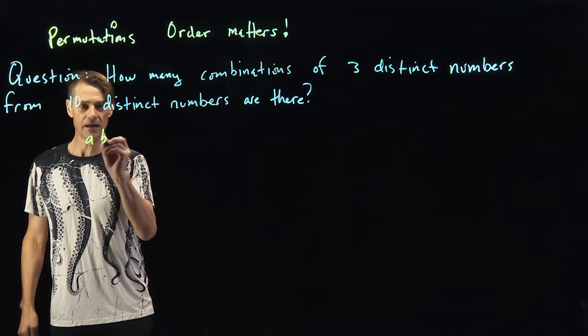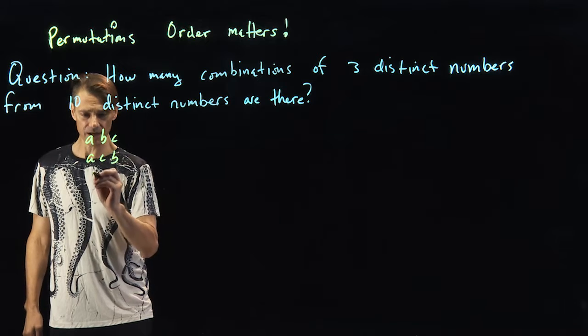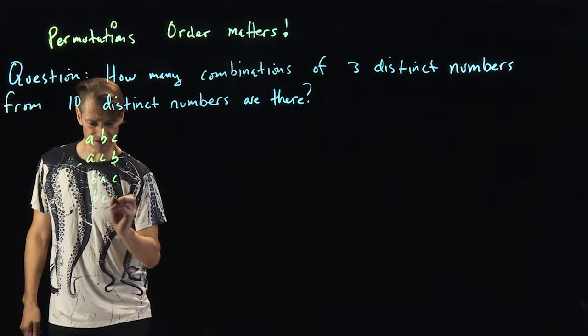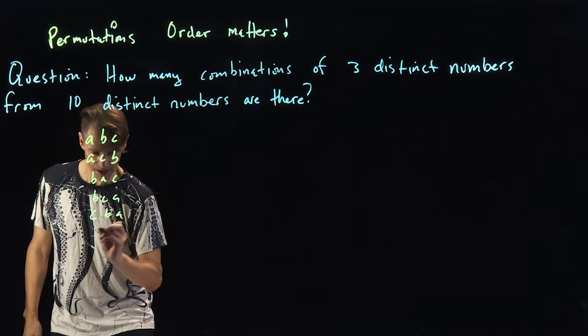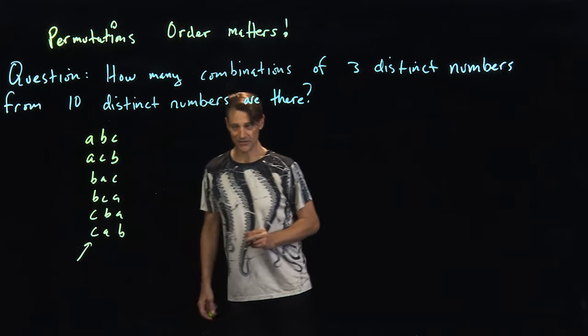So ABC, if order matters, we can have this: ACB, BAC, BCA, CBA, CAB. An accident. It's not a secret message.